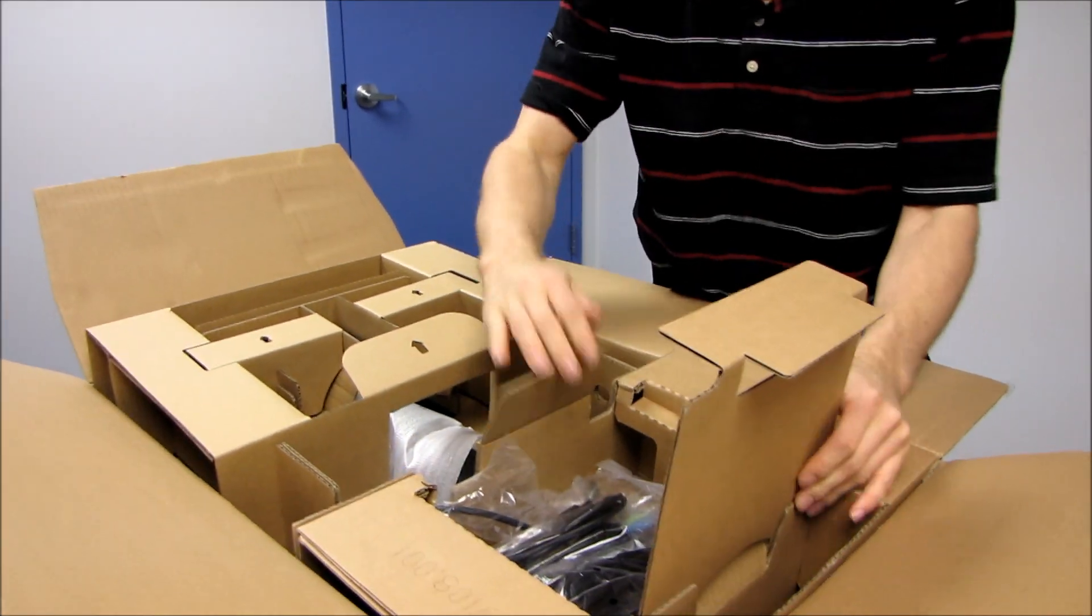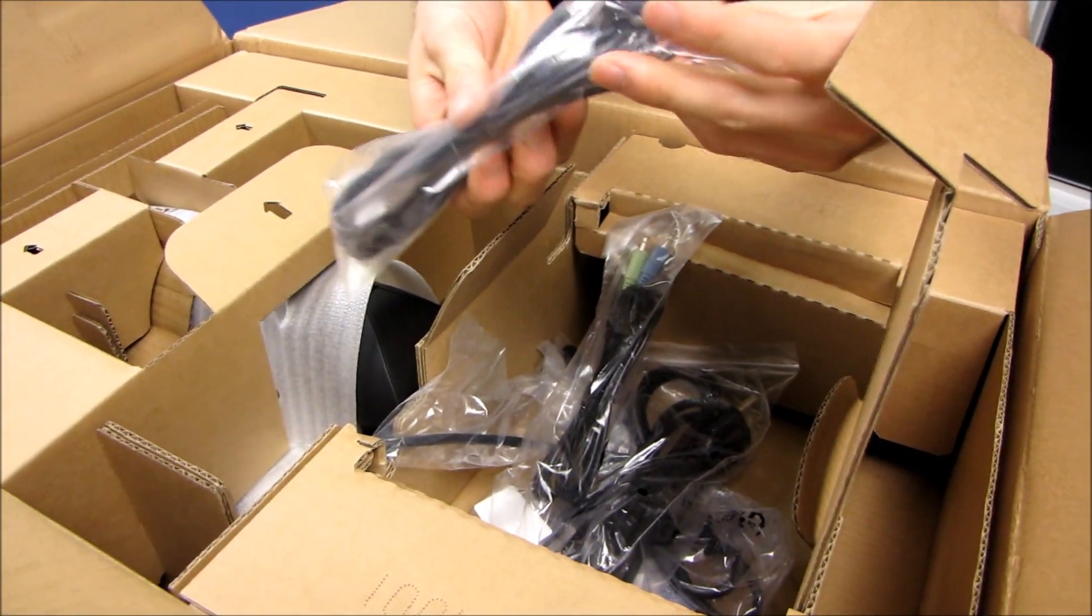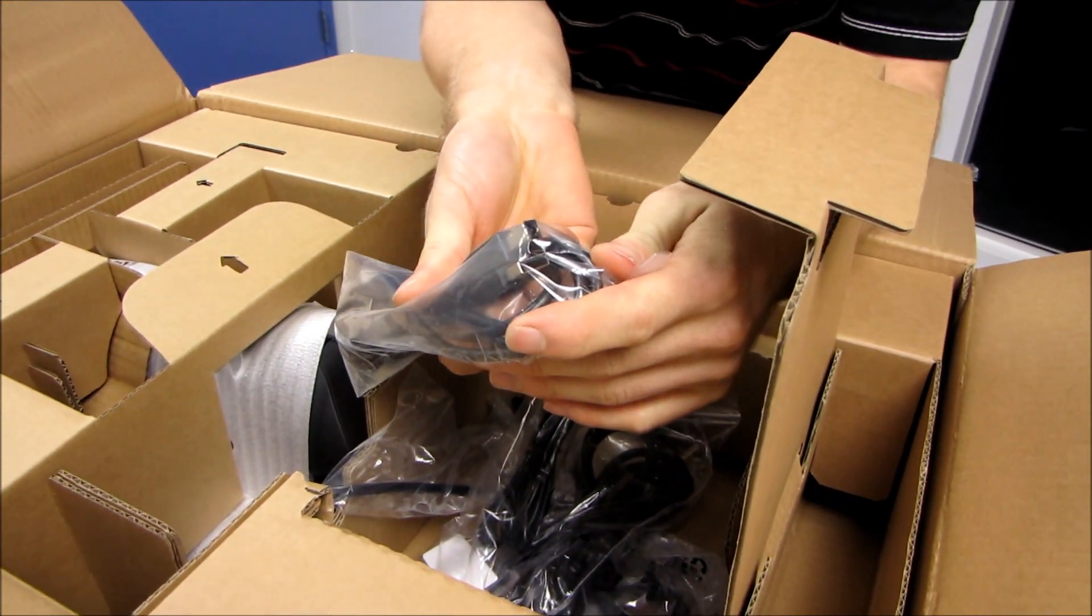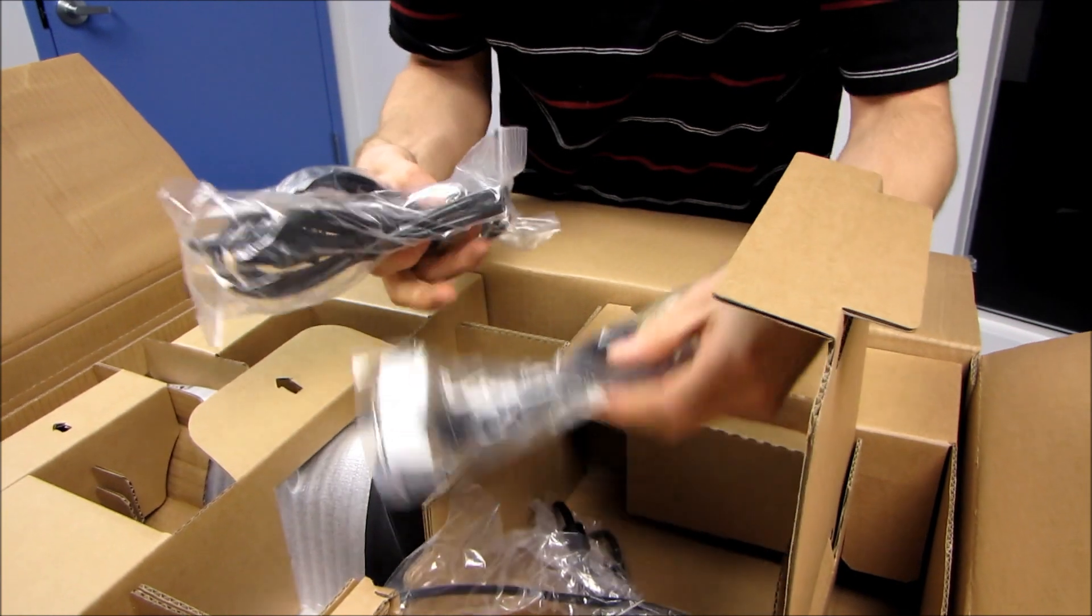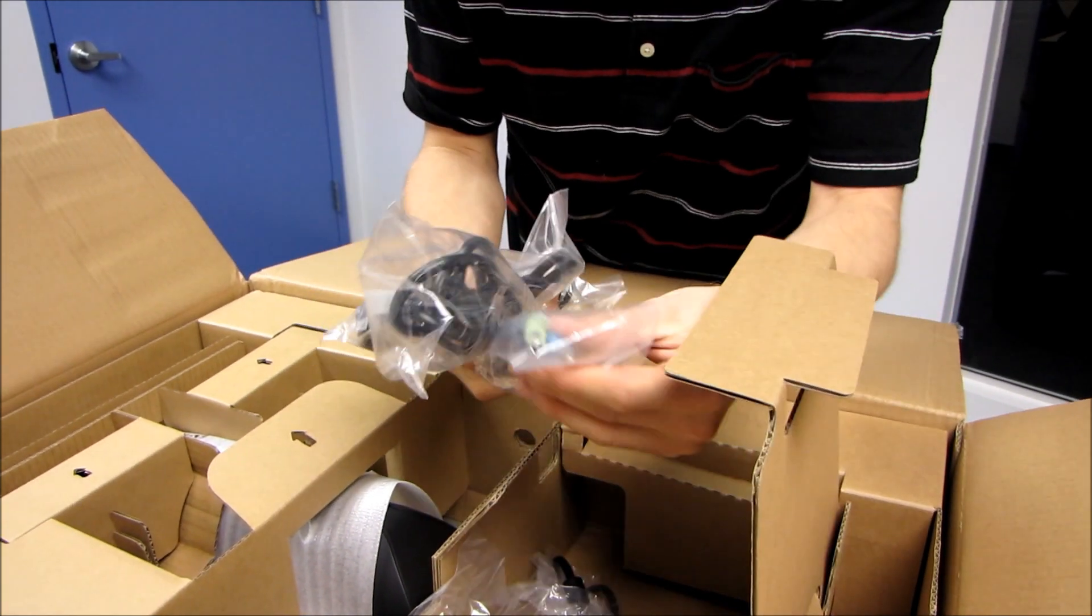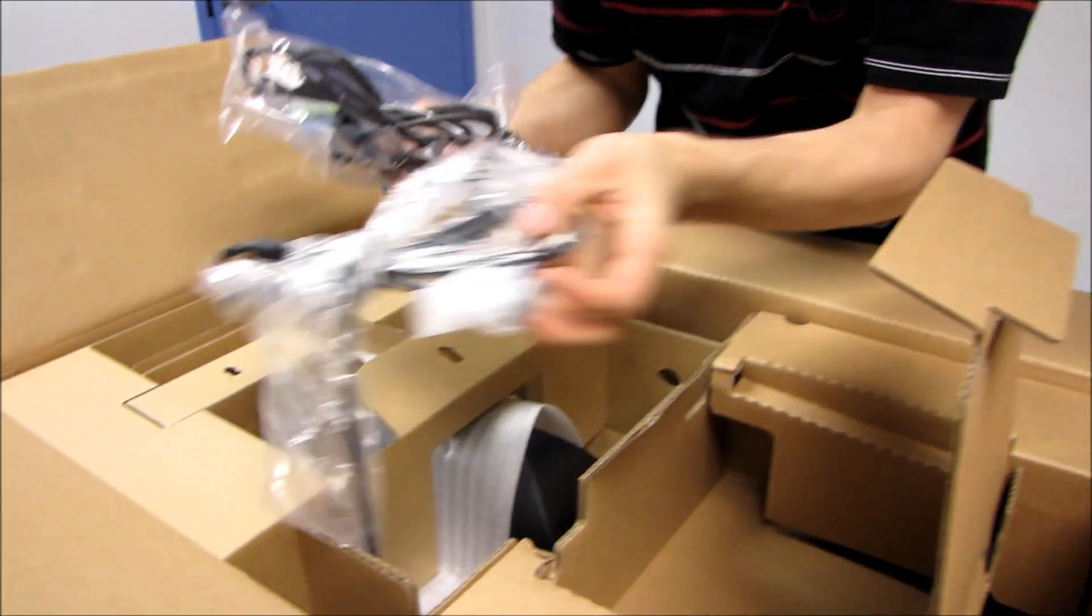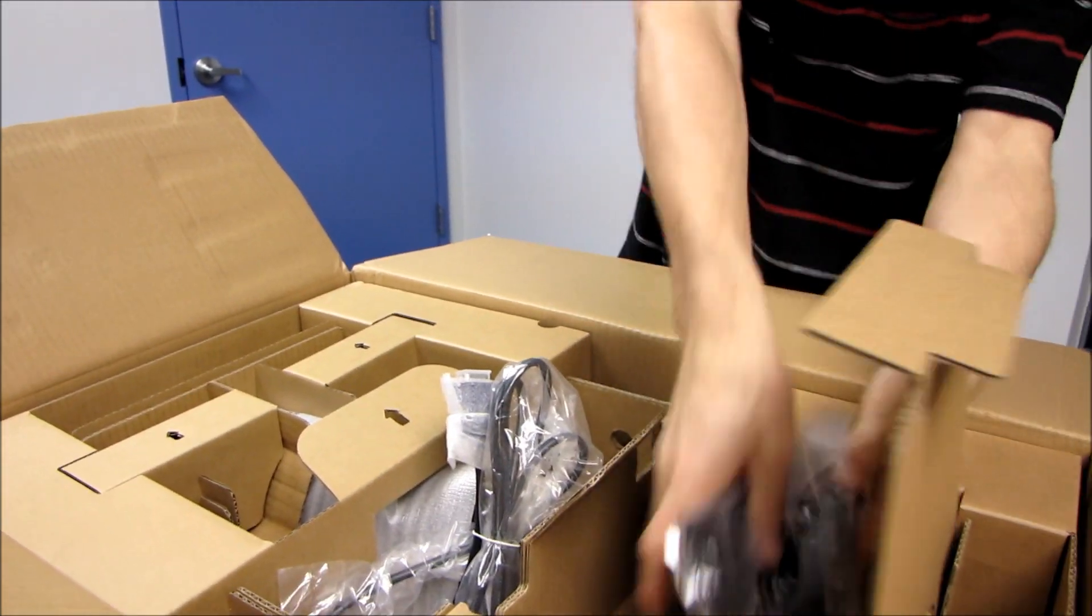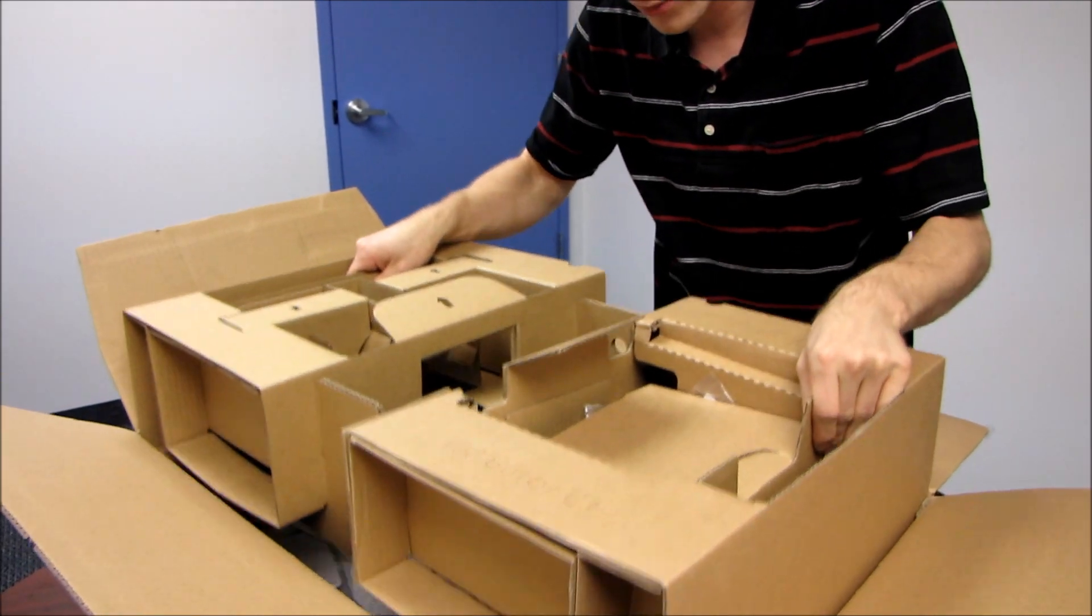And let's take this out. Oh accessories. Here I am. I keep wanting to take out the packaging but I can't do it yet. We have a USB A to B cable, so that's going to be for the built-in USB hub. We have a power cord, we have an audio cord, it does have built-in speakers, and then we also have an included VGA cable.